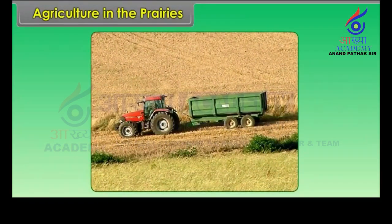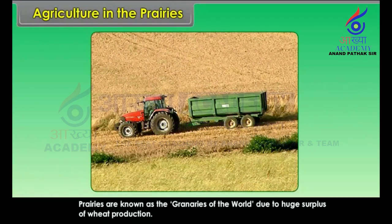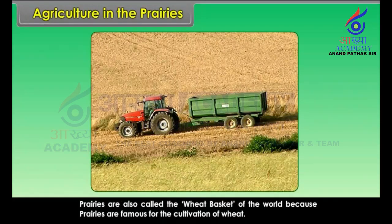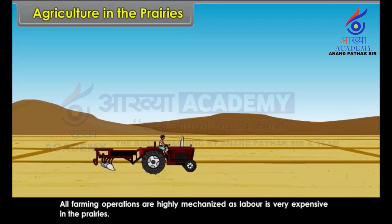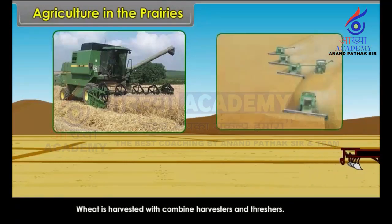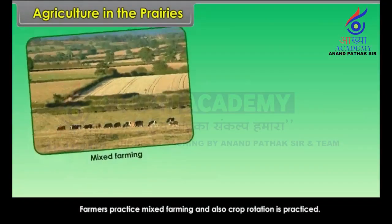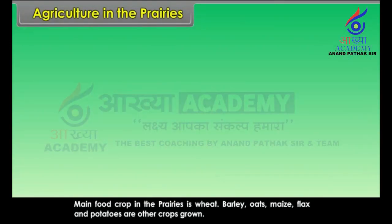Wheat farming is the main agricultural activity on the prairie lands. Prairies are known as the granaries of the world due to the huge surplus of wheat production. Prairies are also called the wheat basket of the world. All farming operations are highly mechanized as labour is very expensive. Wheat is harvested with combined harvesters and threshers. Farmers practice mixed farming and also crop rotation.